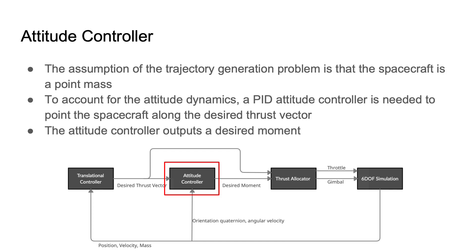In the problem assumption, we model the spacecraft as a point mass, but we will need to account for the fact that the spacecraft is actually an extended body. For this, we have an attitude controller, which computes the desired moment on the vehicle needed to align it with the desired thrust vector. Now, we have a desired force and a desired moment, and we need to figure out how to combine these two.